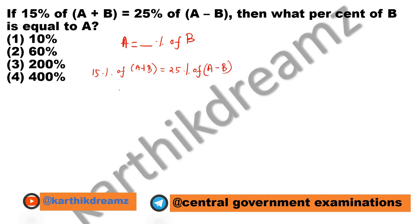15% can be written as 15 by 100 into A plus B equals 25 by 100 into A minus B.